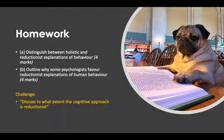That brings us to some homework. First, distinguish between holistic and reductionist explanations of behavior — that should be rather easy. Second, outline why some psychologists favor reductionist explanations of human behavior. And for a harder question, discuss to what extent the cognitive approach is reductionist. If you want to go even harder, discuss to what extent the psychodynamic approach is reductionist.